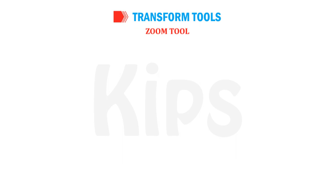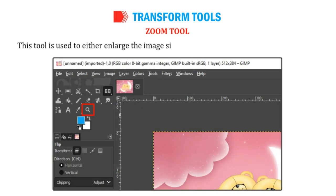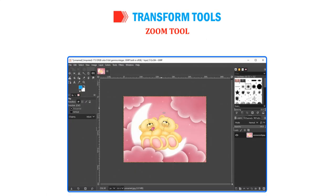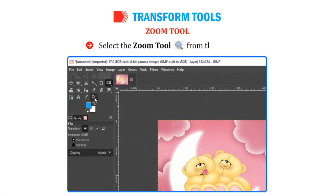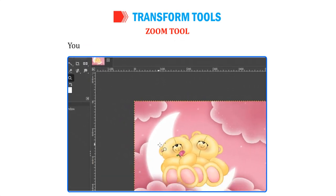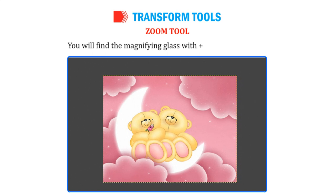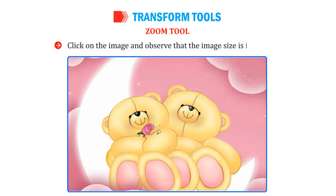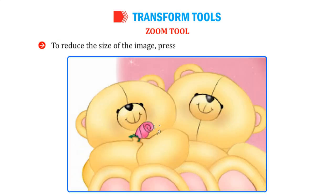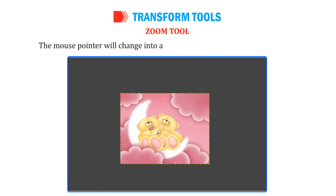The Zoom tool is used to either enlarge the image size or shrink its size while editing the image. Select the Zoom tool from the Toolbox. You will find the magnifying glass with a plus sign on the screen. Click on the image and observe that the image size is increased. To reduce the size of the image, press the Control key and click on the image. The mouse pointer will change into a minus sign along with the magnifying glass.